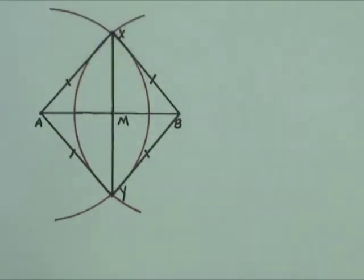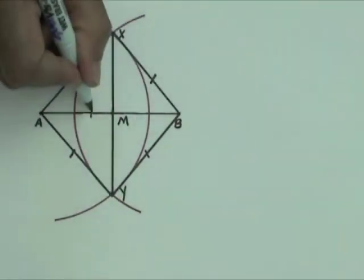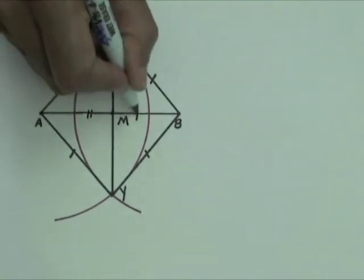Since the diagonals of a rhombus bisect each other, XY bisects AB. Therefore, AM is congruent to BM.